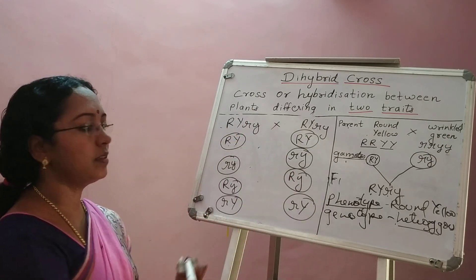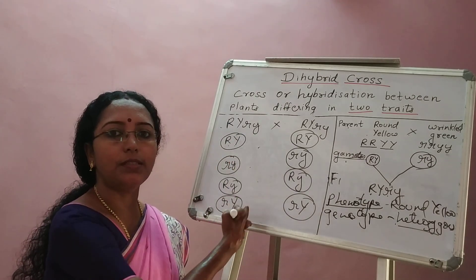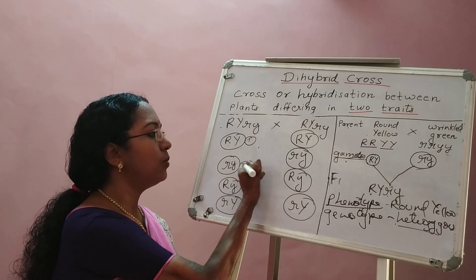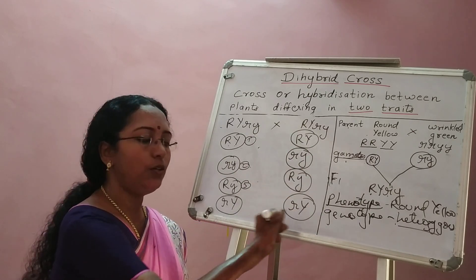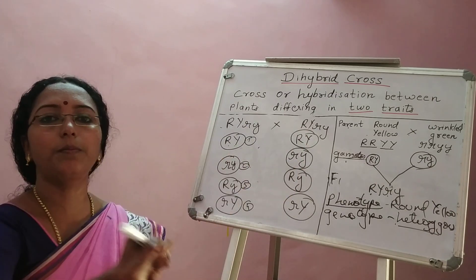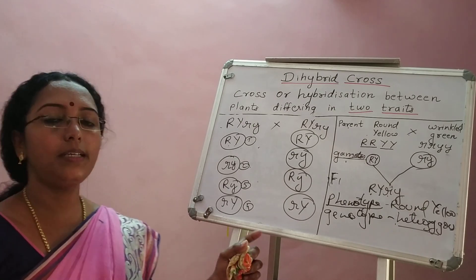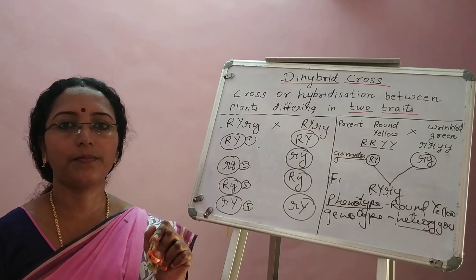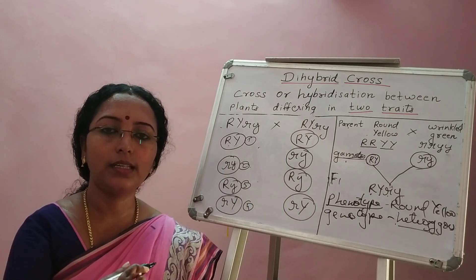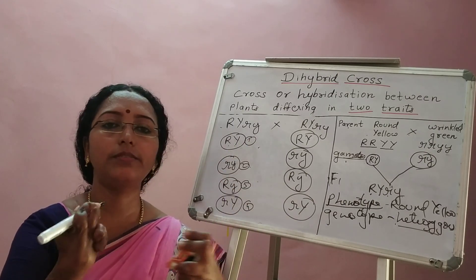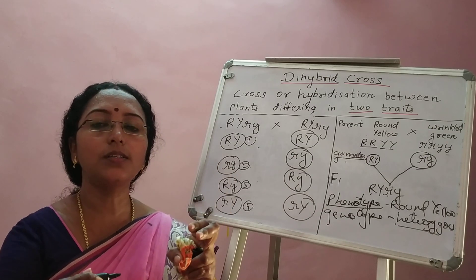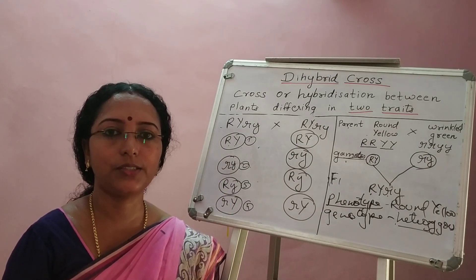It would be very difficult to draw all the progeny combinations by simply writing lines, and that is why here comes the importance of the Punnett square. How to combine these gametes to get the F2 progeny for dihybrid cross, the genotypic ratio, the phenotypic ratio, and most importantly Mendel's law based on this dihybrid cross will be dealt with in the next session.